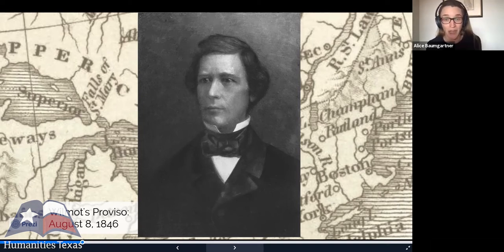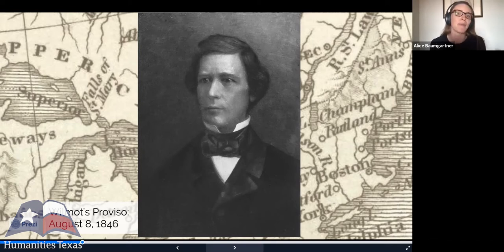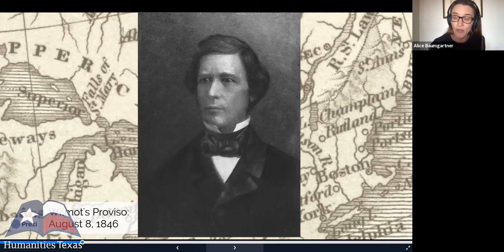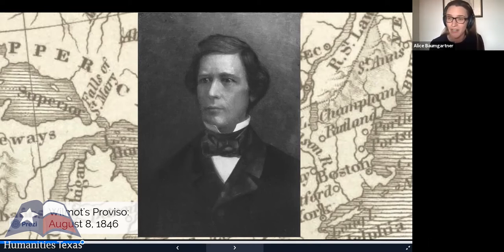It remains something of a puzzle because David Wilmot was a Democrat, and in 1846 the Democratic Party stood for a Jeffersonian ideal of limited government — opposed to federal funding for internal improvements, opposed to a national bank, and opposed to federal interference with respect to slavery. Wilmot was even one of the Northern Democrats who voted in favor of the annexation of Texas as a slave state in 1845. So it's really surprising that a year later he's proposing an amendment to prohibit slavery from the conquered Mexican territories.